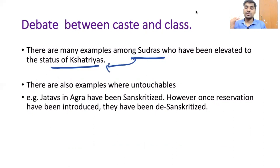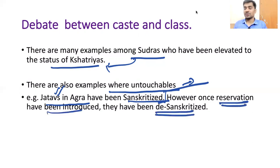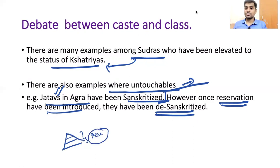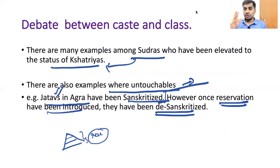Srinivasan also said the Indian caste system is not entirely rigid as claimed by Dumont — mobility was permitted at certain points. He gave the concept of Sanskritization, meaning persons of lower caste adapted practices of Brahmins — learning Sanskrit, learning the Vedas, avoiding non-vegetarianism — and were elevated to higher status. He gave examples like Sudras who were elevated to Kshatriyas, and Jatavas in Agra among untouchables who were Sanskritized. The caste system started getting more rigid only after reservation systems were announced.